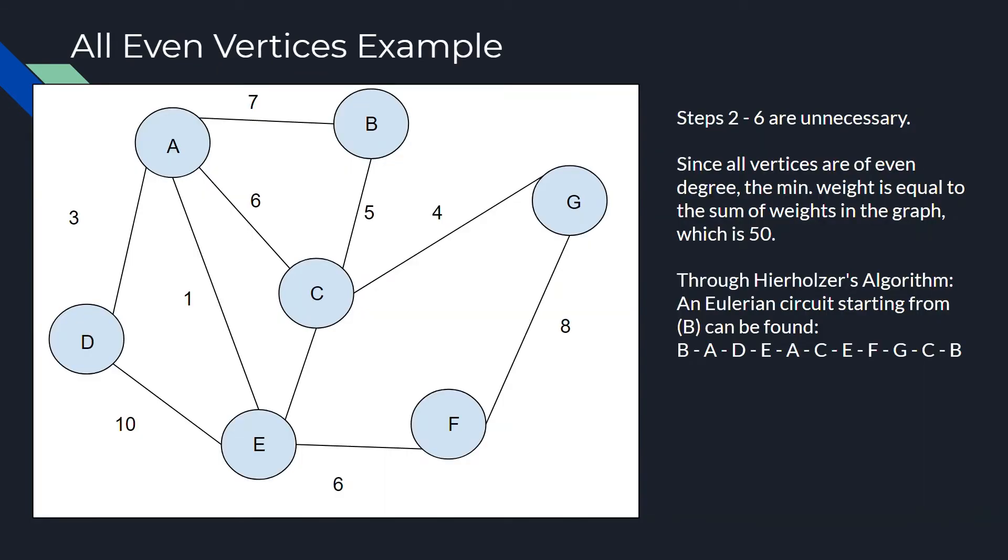So, first things first, let's go over the Eulerian example in which we have no odd vertices present. So, as you can see from this graph, A has degree four, D has degree two, B two, C four, E has degree four, F has degree two, and finally G has degree two. So, first things first, we can immediately see that all the vertices in our graph are even.